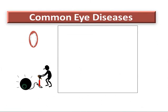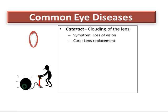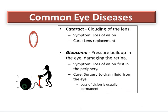Common eye diseases include cataract, which involves clouding of the eye lens. Symptoms include loss of vision and its cure is lens replacement. Glaucoma is a pressure buildup in the eye which damages the retina. Symptoms include loss of vision first in the periphery, and its treatment is surgery to drain fluid from the eye — however, loss of vision is usually permanent.